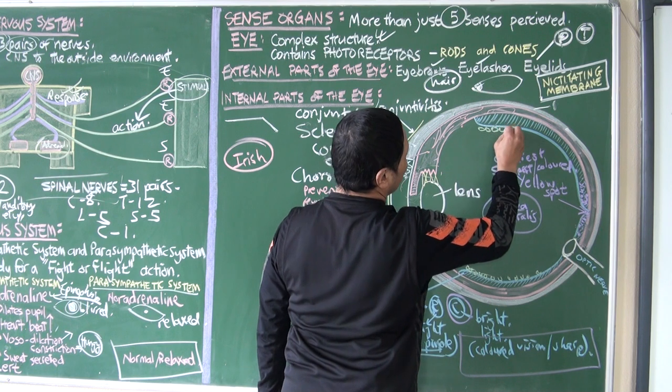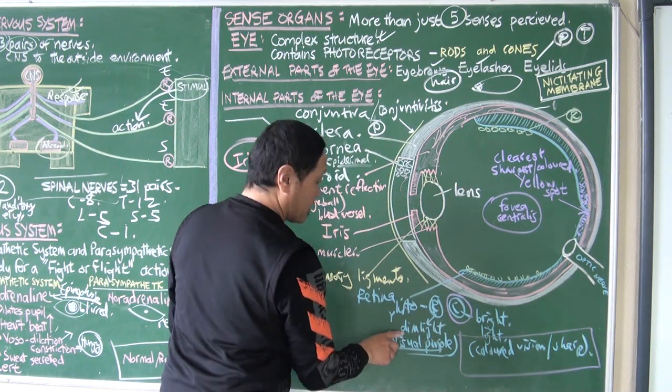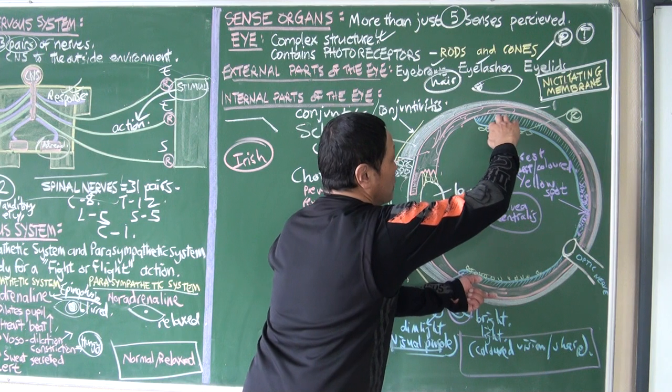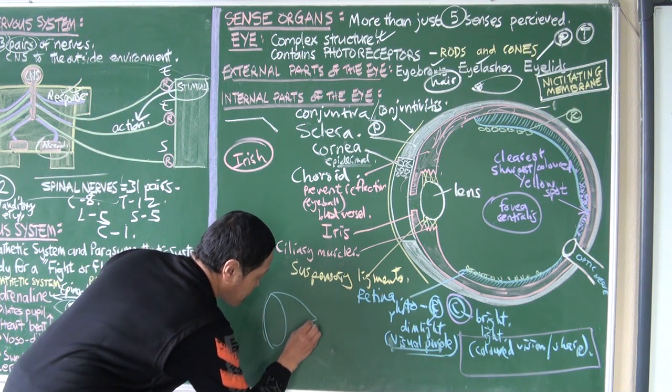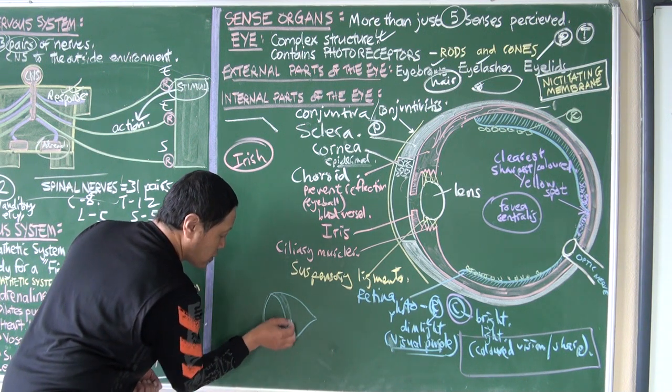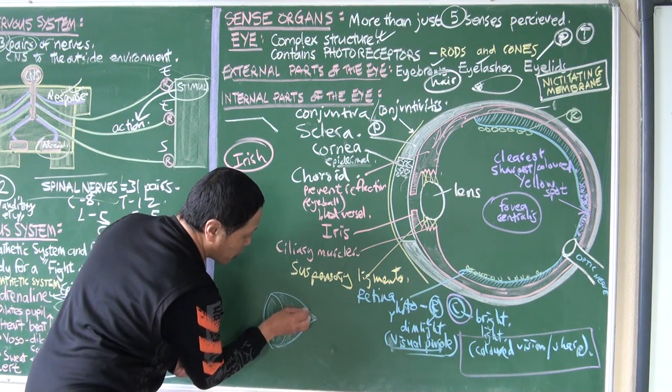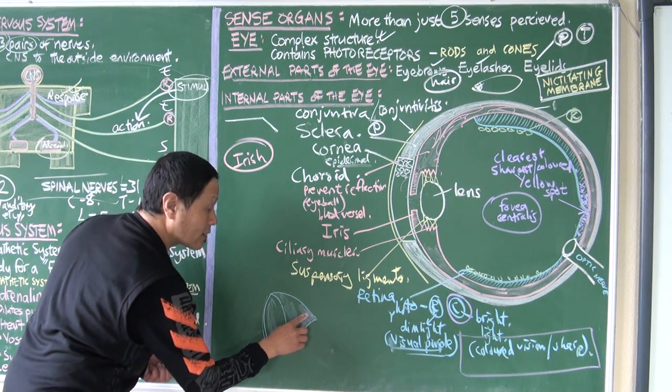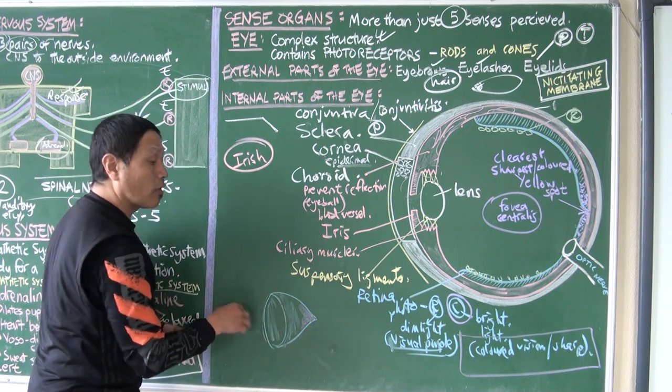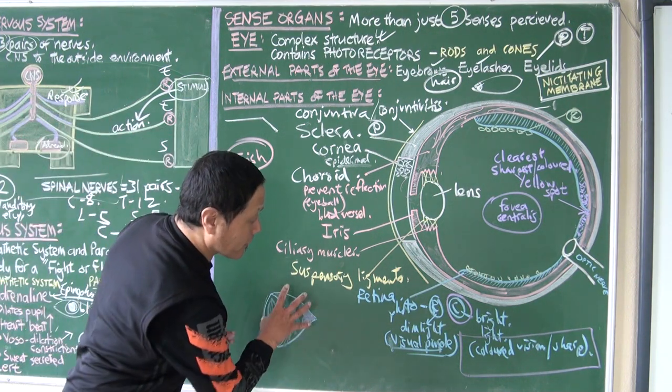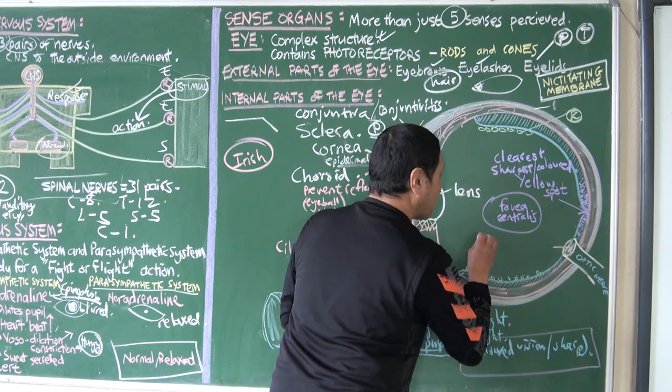And this part contains more of rod cells. These are the portions which contain more of rod cells. Therefore they are the ones that actually work at night or dim light. We can take this retina as a cup-like structure. We find the whole layer - this is the part where you find more of rod cells, and this is the part where you find more of cones. Bright light, clear, sharpest vision and color vision here. Dim light and visual purple or black and white vision. This is the retina.